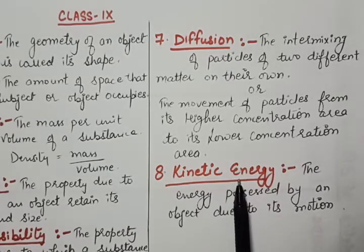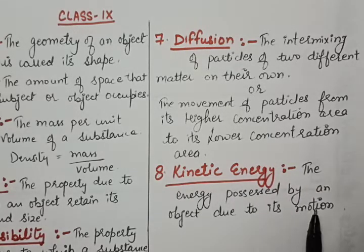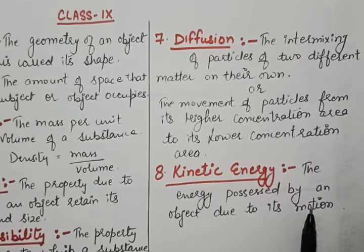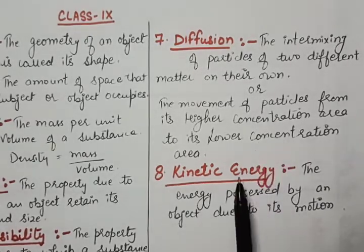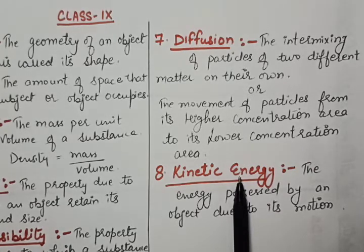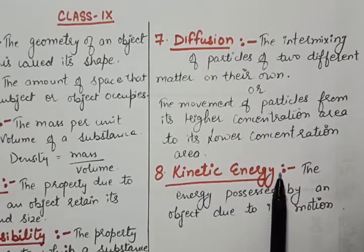Kinetic energy: the energy possessed by an object due to its motion is called kinetic energy. It is important to understand that the diffusion process is possible due to kinetic energy — as the particles are able to move, that is why they move from higher concentration to lower concentration. That is diffusion, and this is kinetic energy.